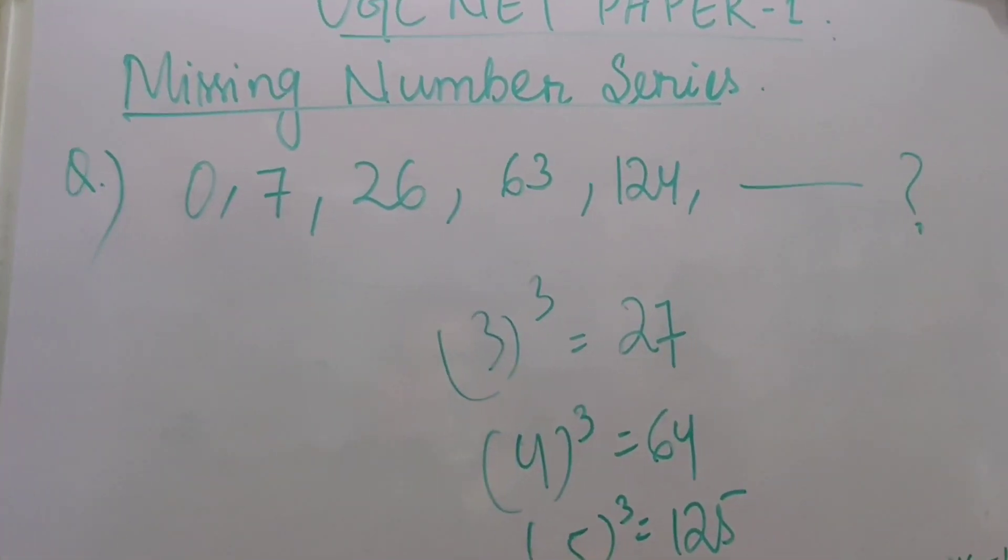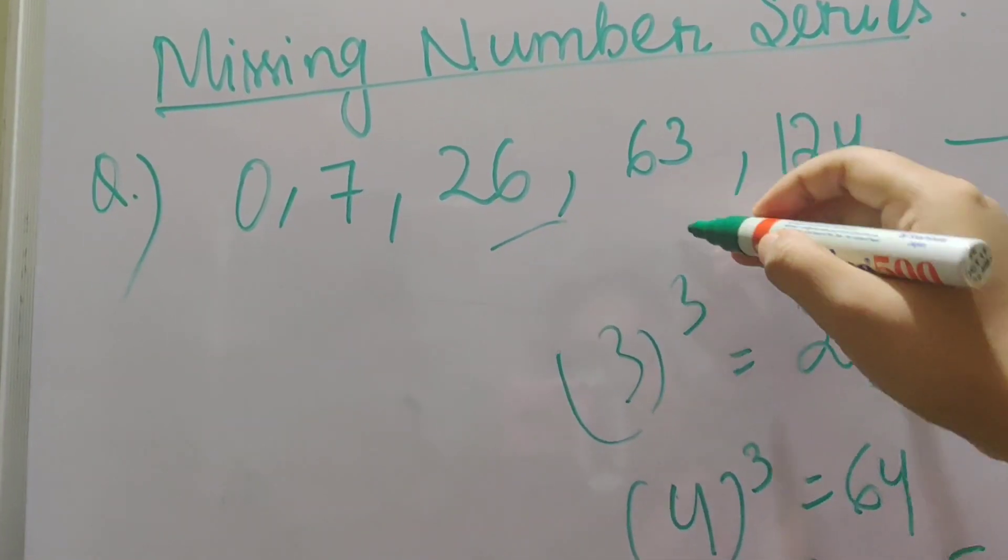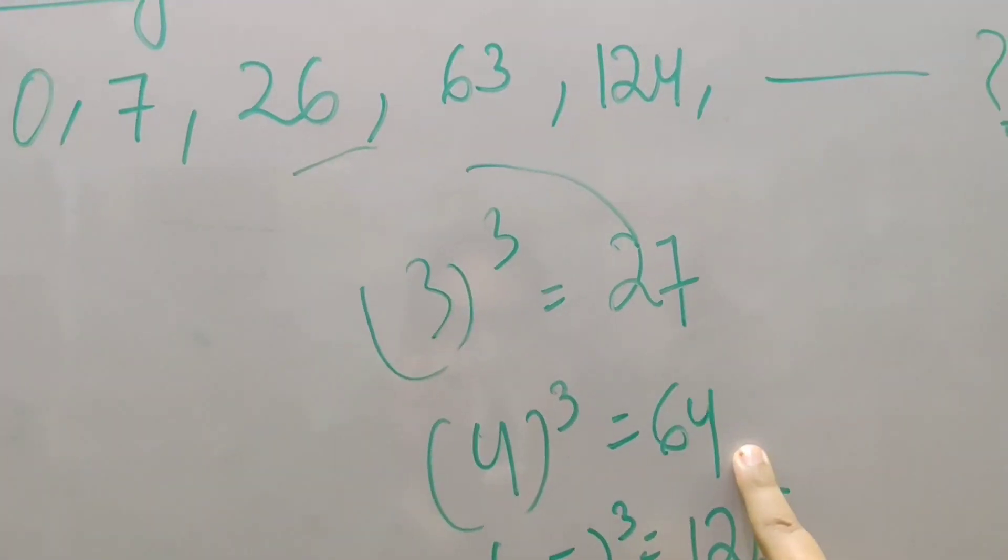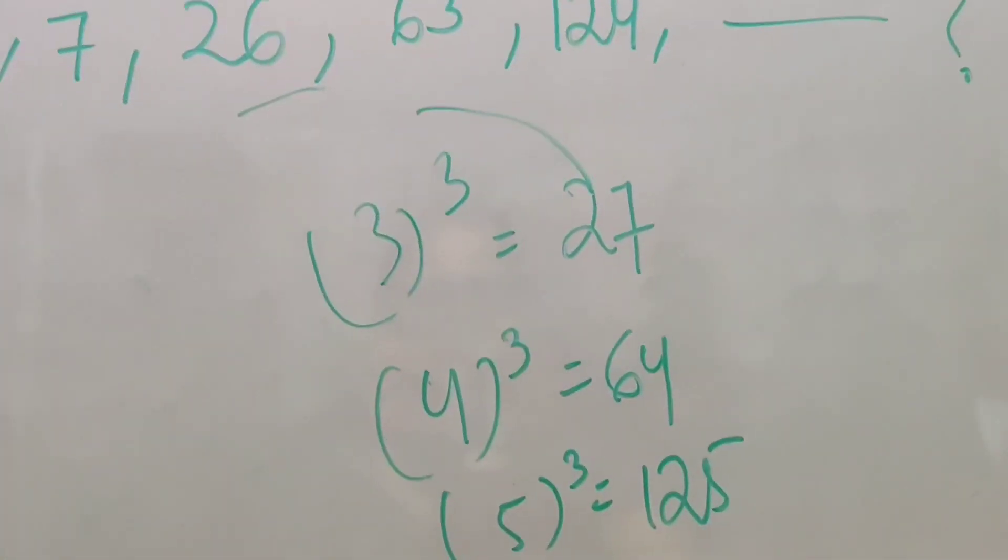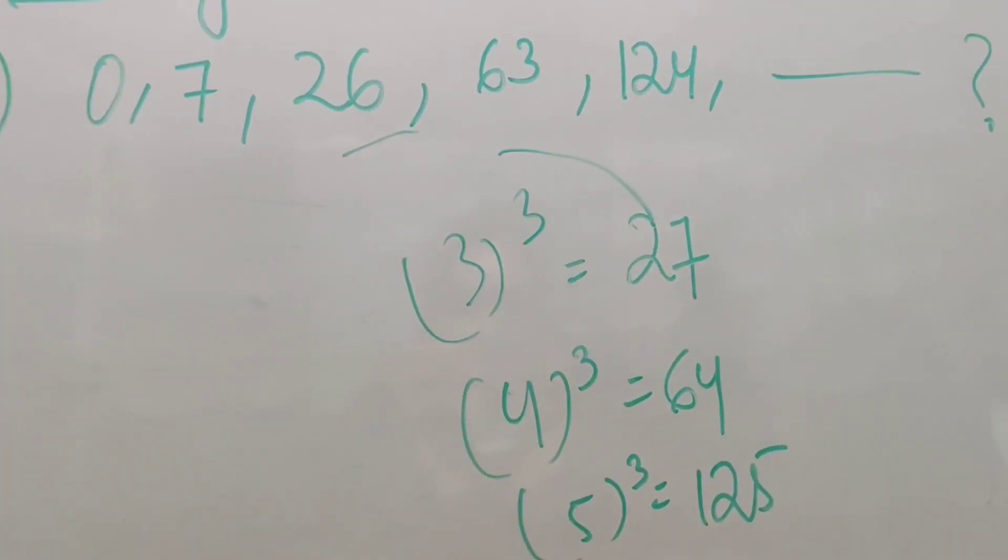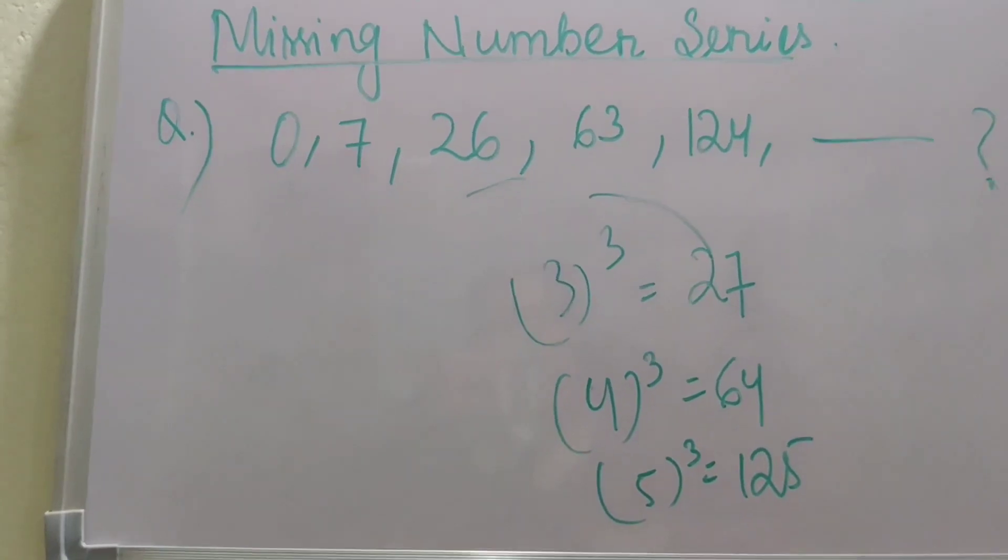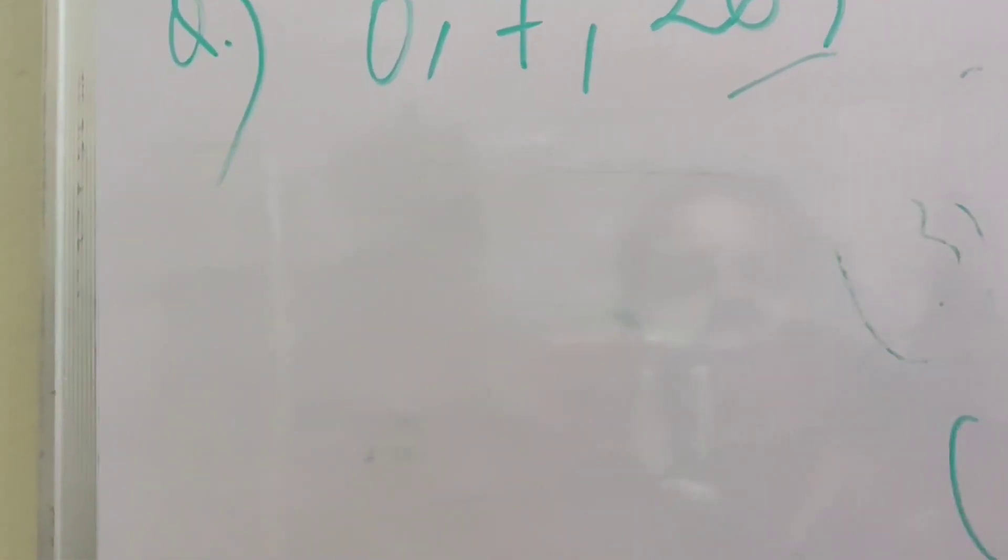So you can observe that here 26 is written instead of 27, 63 is written instead of 64, 124 is written instead of 125. So we knew that it is something which is related to cube.